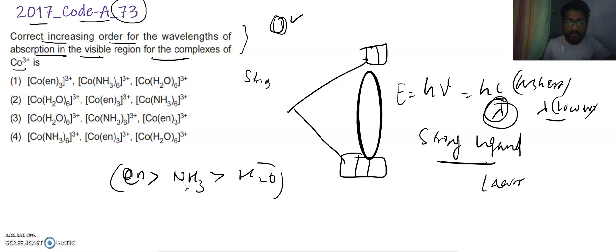The lambda should be in this manner. H2O should be having highest lambda, and afterwards we will be having for NH3, and afterwards we will be having for En thrice.